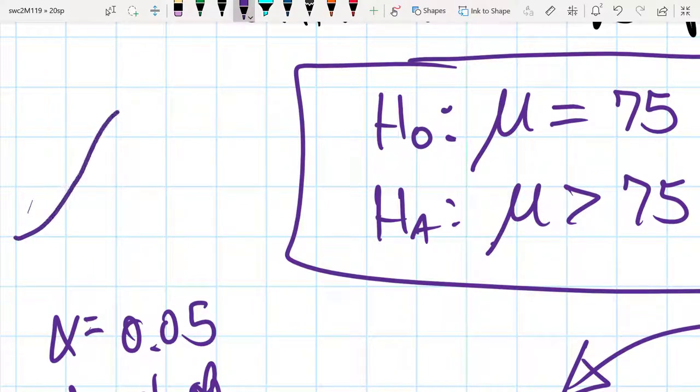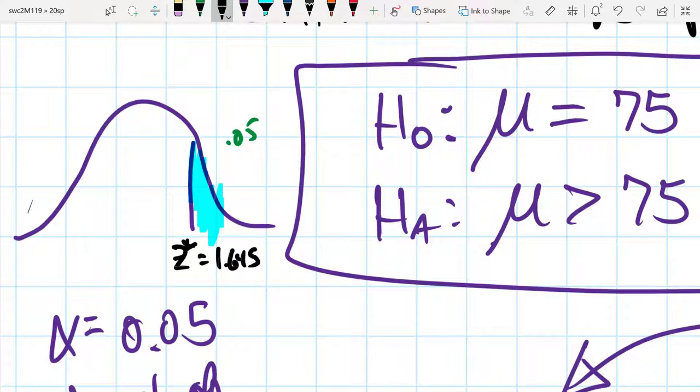The test that we're looking at, the rubric of sorts looks like this. Since this was 5%, the critical value that we're going to have to compare the test statistic to is 1.645, a typical value.